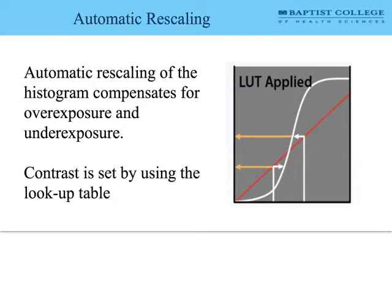For automatic rescaling, the values of interest are predetermined, and the automatic rescaling makes data output and image display consistent even when there are errors in exposure technique. Rescaling can create an acceptable image despite overexposure, meaning the technologist has no visual cue that overexposure occurred — this is what we call dose creep. Automatic rescaling is the number one culprit. It's actually very helpful, but we must understand there's no visual feedback to determine whether an appropriate technique was used. Dose creep is the potential to gradually increase patient radiation exposure over time due to that lack of visual feedback.